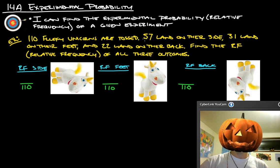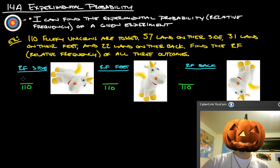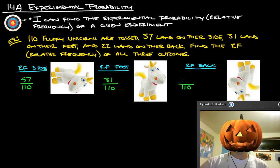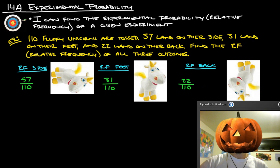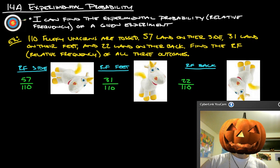And then we have 57 land on their side, so 57 out of the 110 land on the side, 31 out of 110 land on their feet, and then 22 out of 110 land on their back.